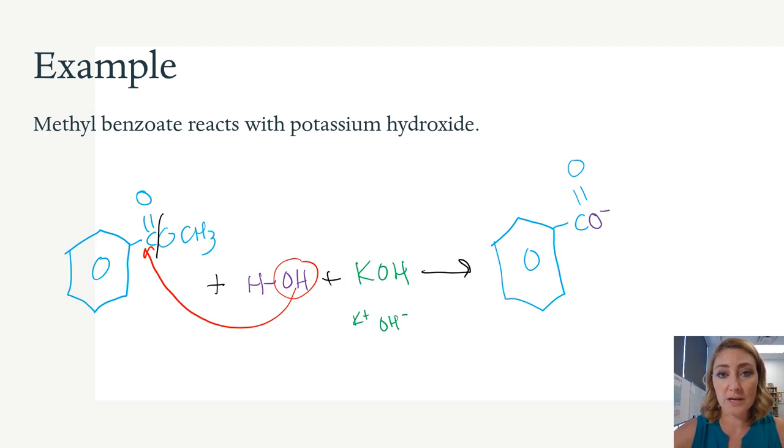But I'm going to keep the colors consistent for you. So we took on the OH and we've donated the proton. And we have a charge of a minus one. That will attract our potassium with the plus one charge. And there is our carboxylate salt.